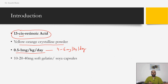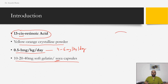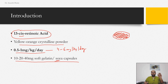Isotretinoin is available as 10, 20, and 40 mg soft gelatin or soya capsules. Vegetarians concerned about gelatin can use soya capsules, but remember these can individually act as allergens in sensitive patients. Most of us know isotretinoin as an oblong or oval, dark brownish-red colored capsule, which helps patients remember to take it.